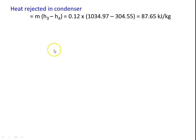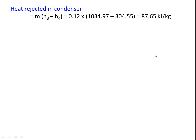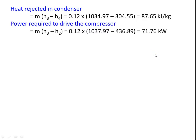Heat rejected in the condenser = M × (H3 - H4) = 0.12 × (1034.97 - 304.55) = 87.65 kW. Power required to drive the compressor = M × (H3 - H2) = 0.12 × (1034.97 - 436.89) = 71.76 kW.